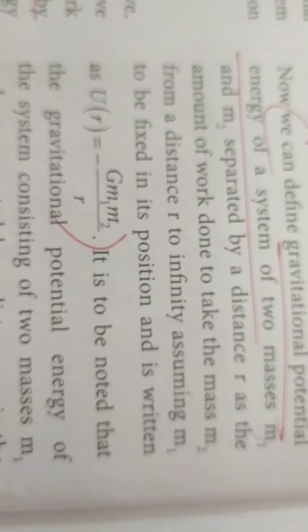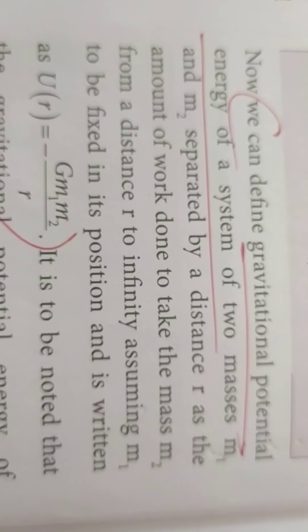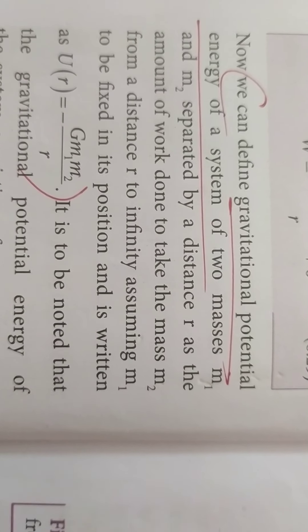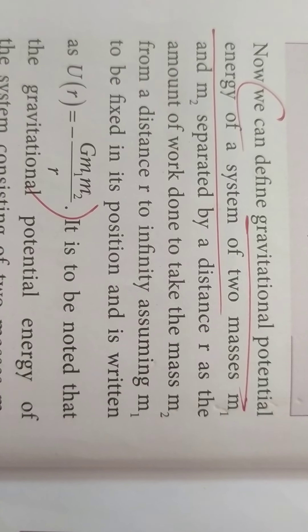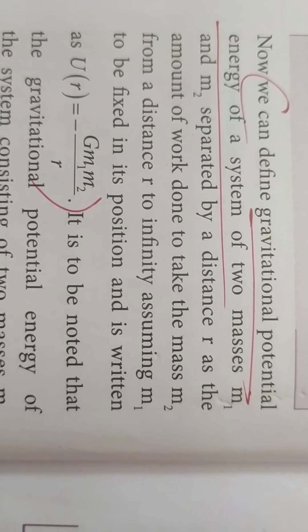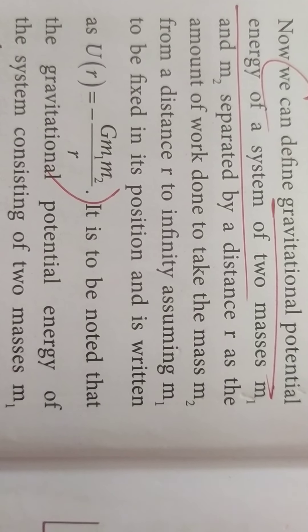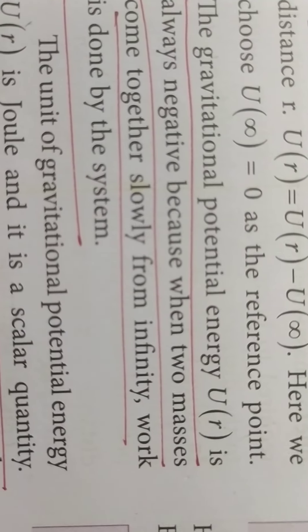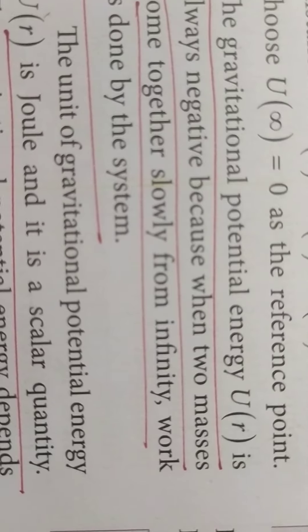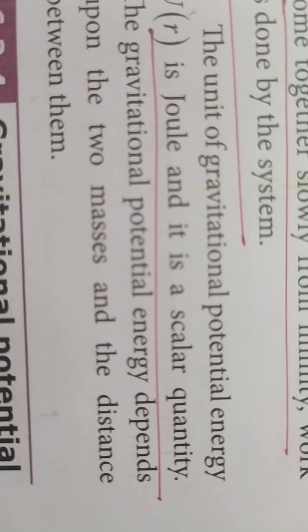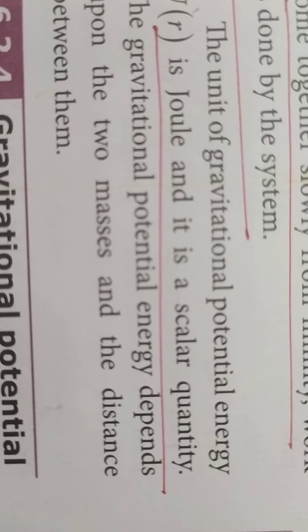Gravitational potential energy is defined as the amount of work done to take mass m2 from a distance R to infinity. So U(R) equals minus G·M1·M2 divided by R. The gravitational potential energy is always negative because the two masses come together from infinity, and work is done by the system — hence the negative sign. The unit of gravitational potential energy is joule, and it is a scalar quantity.